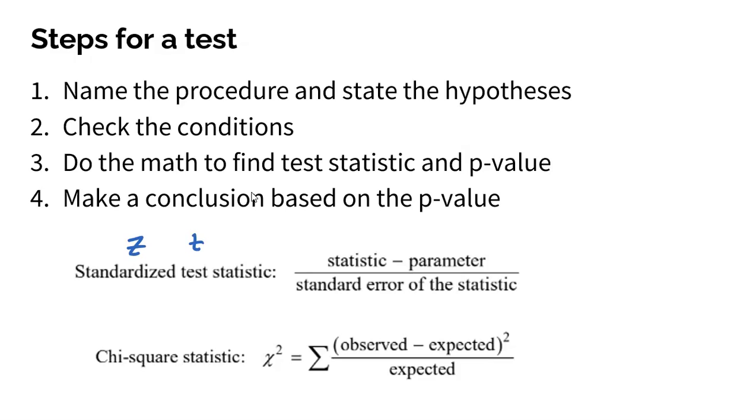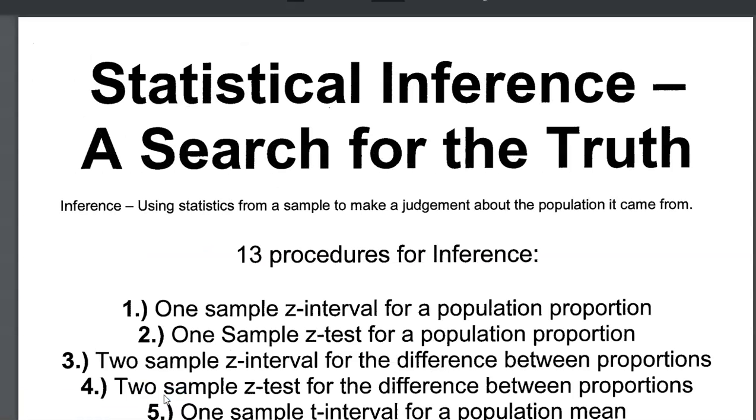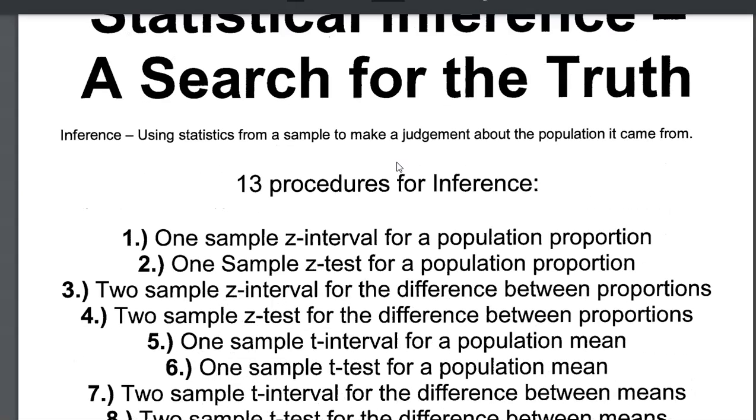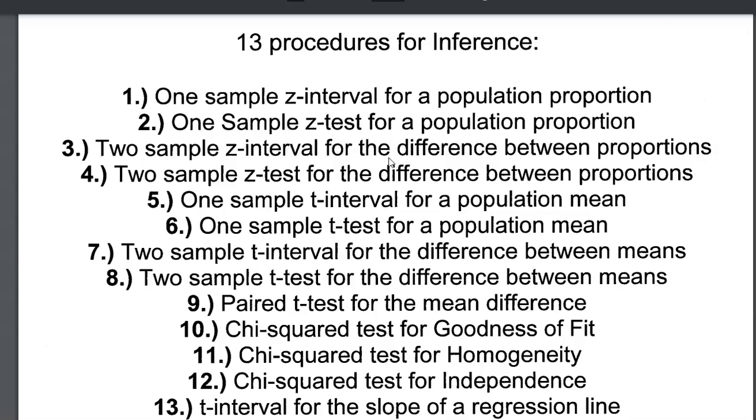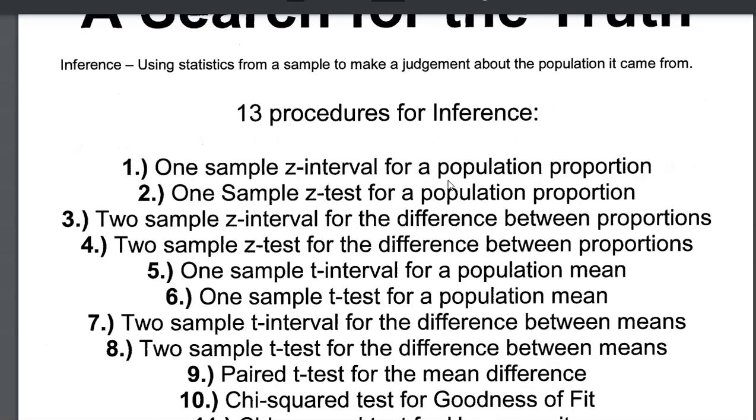What I have created for you is what I call a book of inference. It is a document that details all of the different inference procedures. I have 13 of them. There's 14, but I think that last one is extremely rarely used on the AP exam, so I usually don't even get to it.